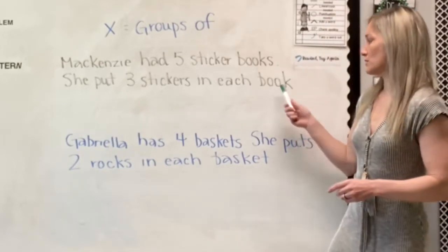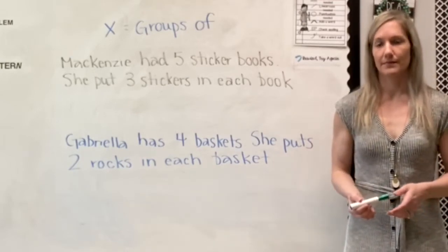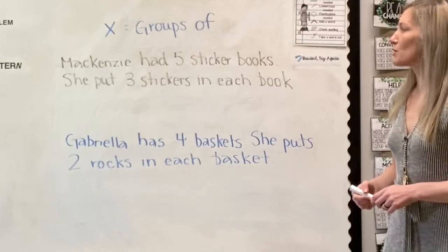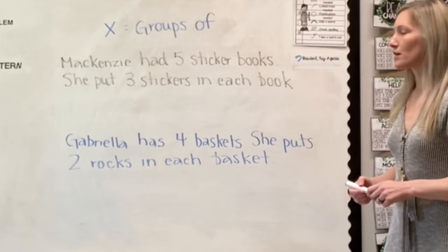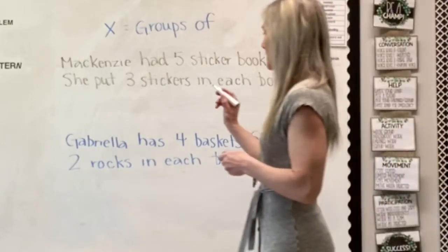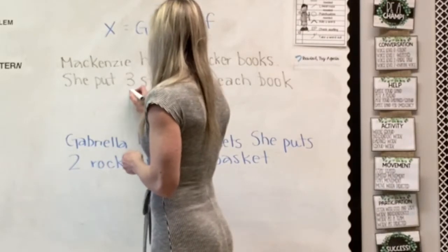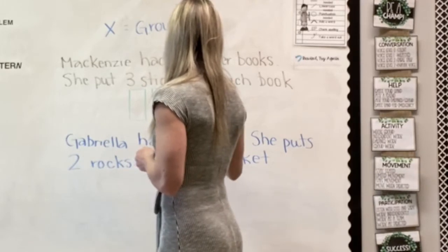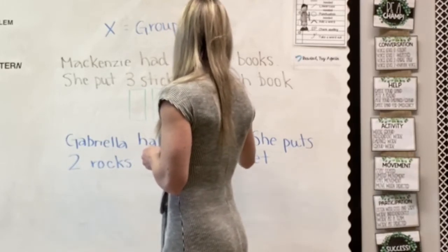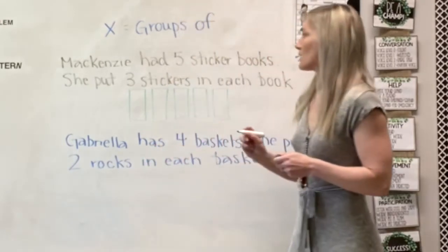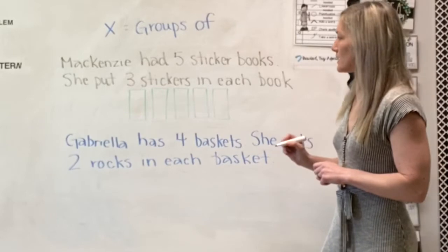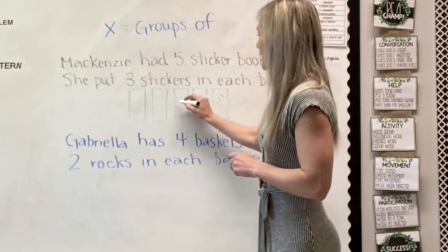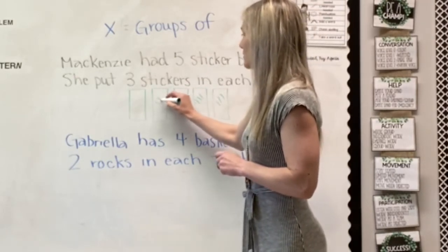Let's look at our number stories and how we would write them. The first one says Mackenzie had five sticker books. She put three stickers in each book. The first thing we want to do is draw it. So Mackenzie had five sticker books — one, two, three, four, five. She put three stickers in each book, so each one of my sticker books has three stickers. They are all equal.